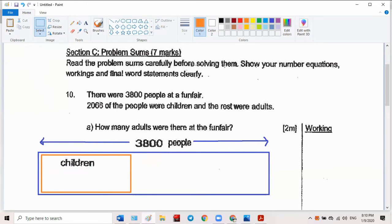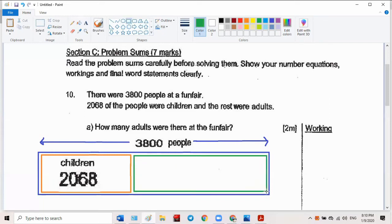So what's the number? 2068. Can you see? The rest were adults. So what must I draw? The rest were adults, so that means all these people are adults. I'm sure you can see number bonding already, right? How many adults were there?